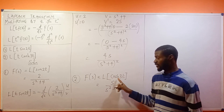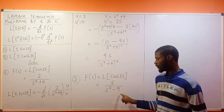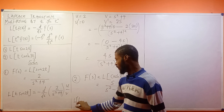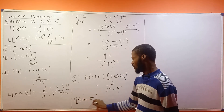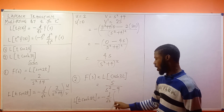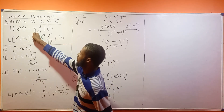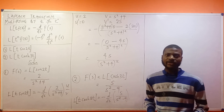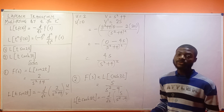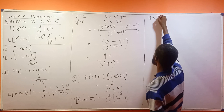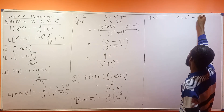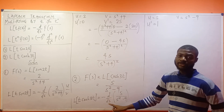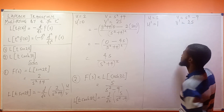So F(s) is s divided by s squared minus 9. The Laplace transform of t·cosh 3t becomes minus d over ds of F(s), and F(s) is s divided by s squared minus 9. Now we differentiate this using the quotient rule: u equals s, v equals s squared minus 9. Then u prime equals 1 — since we're differentiating with respect to s — and v prime equals 2s.